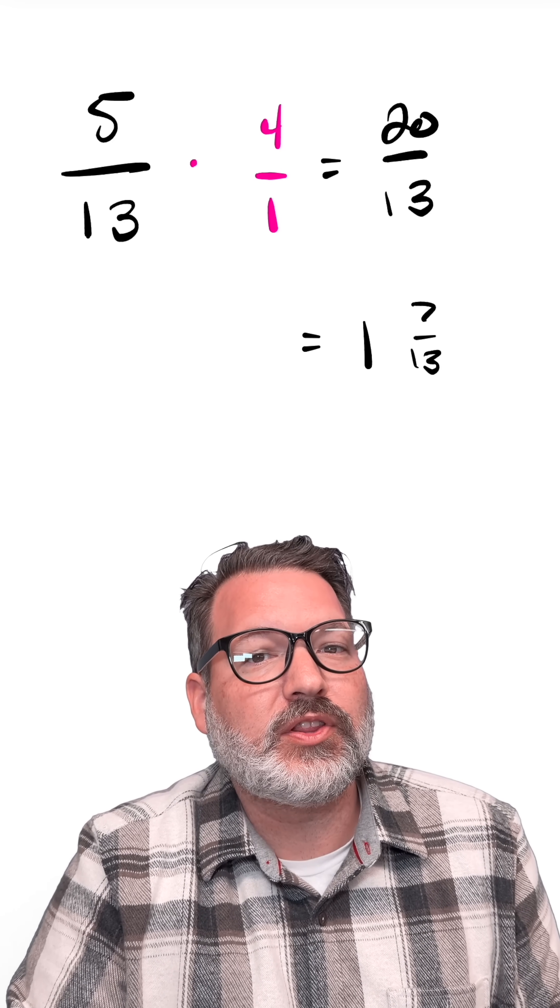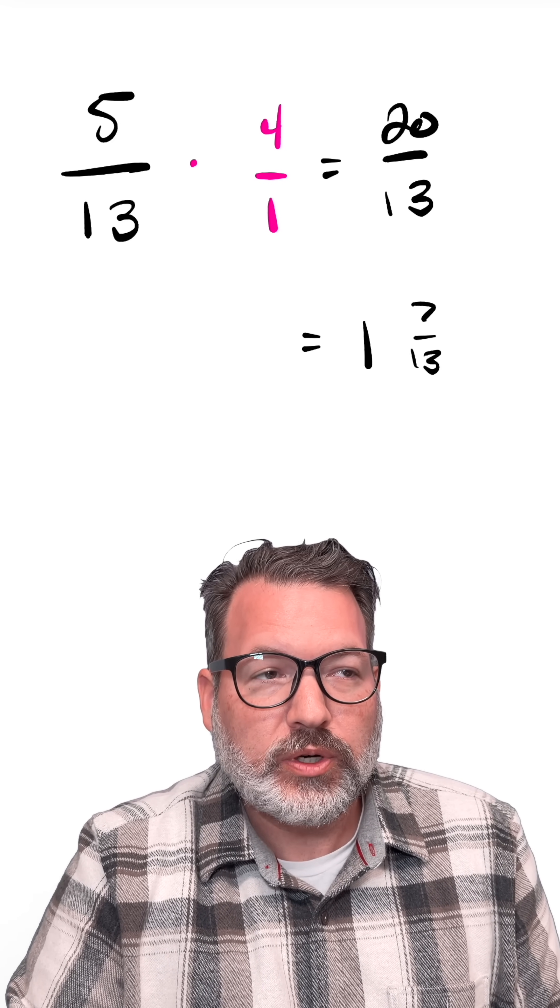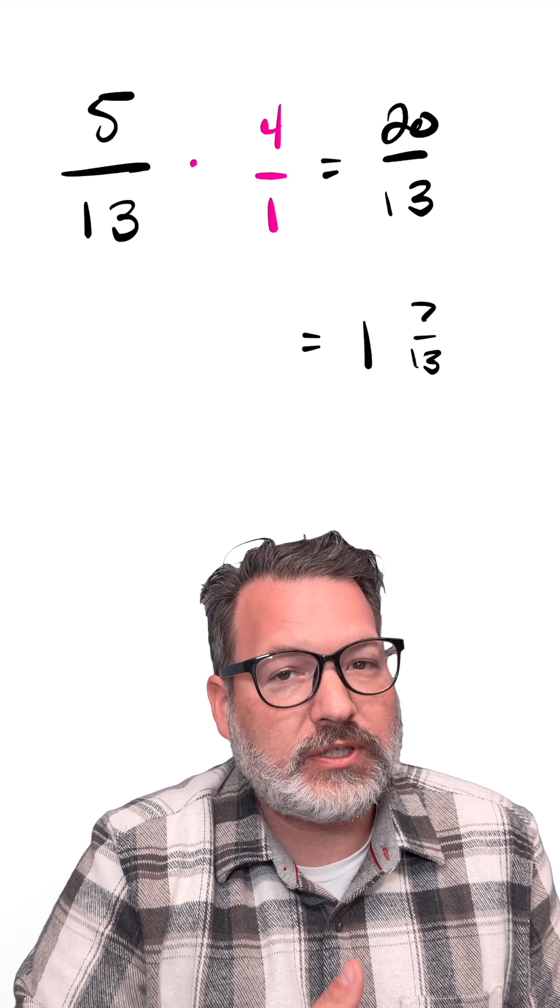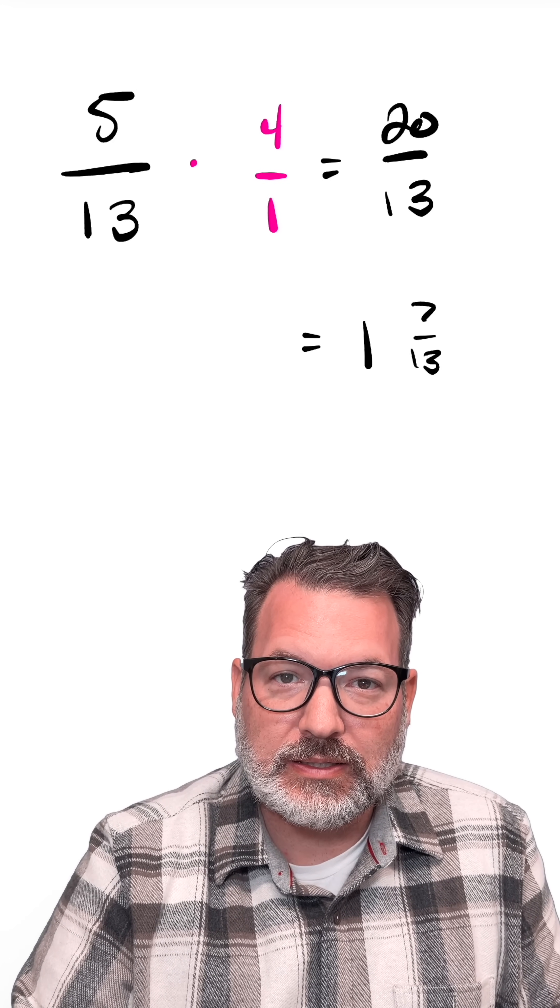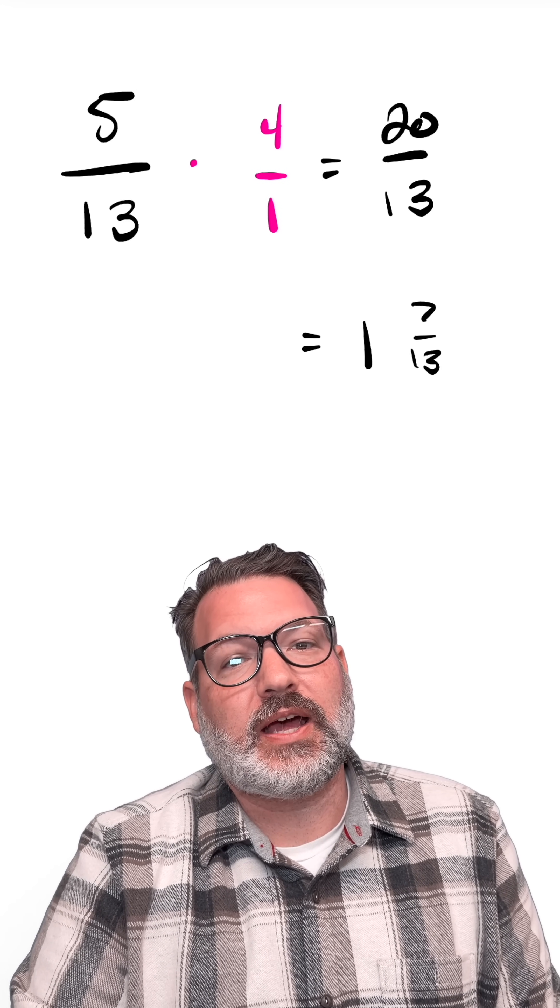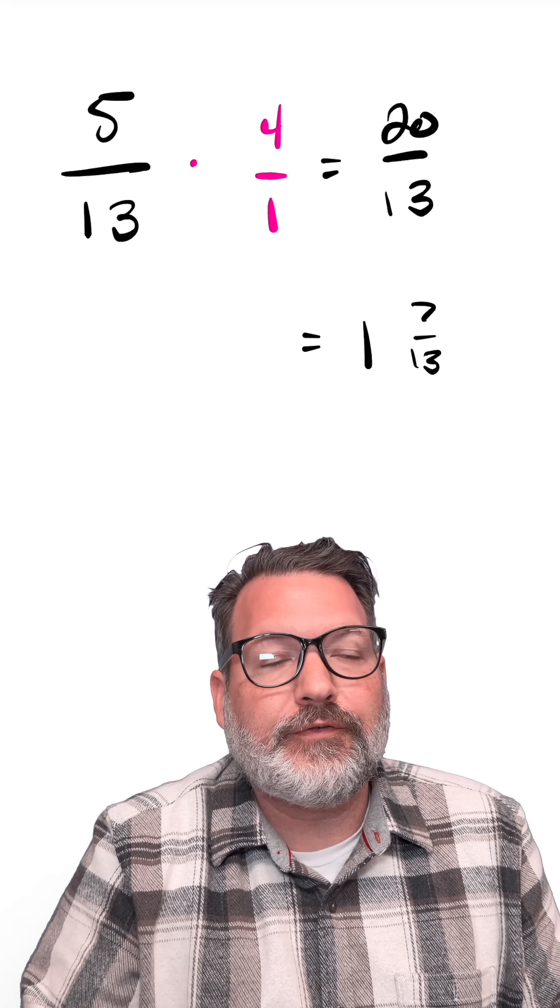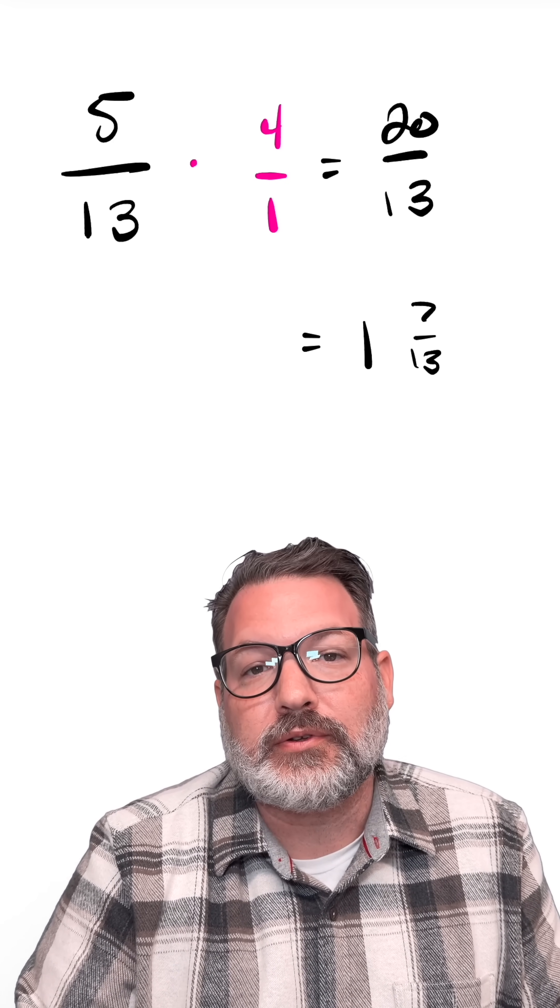We're not saying that we have one and seven thirteenths pizzas right now. We're saying if you divided five thirteenths of a pizza up into one fourth-sized slices, you would have one full slice of that size, and then another seven thirteenths of a fourth-sized slice left over after that.